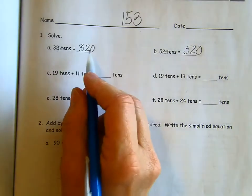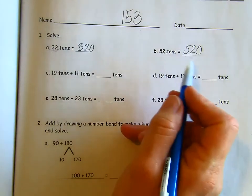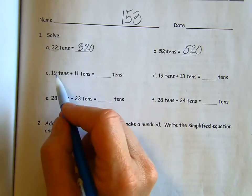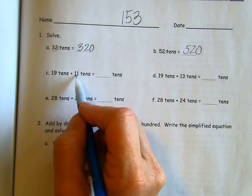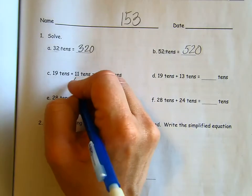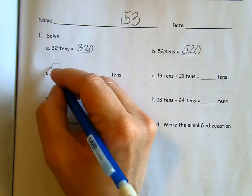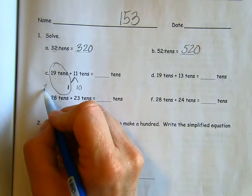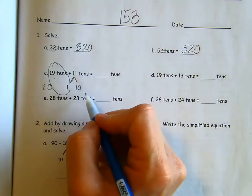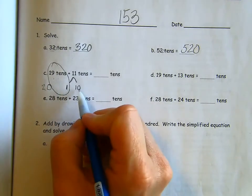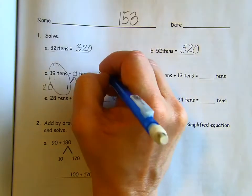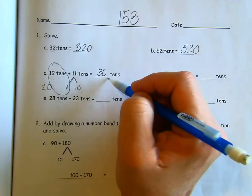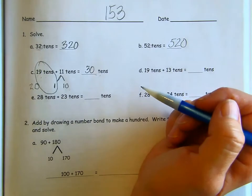So now we're going to use that knowledge because we're more comfortable with those smaller numbers sometimes. 19 10s plus 11 10s. It's easy to see that if I took one away from here and gave it to this one, I would have 19 and 1. What is 19 and 1? 20. And then I have to add in this other part. So I have 20 plus 10, 30 10s. Now that's 300.